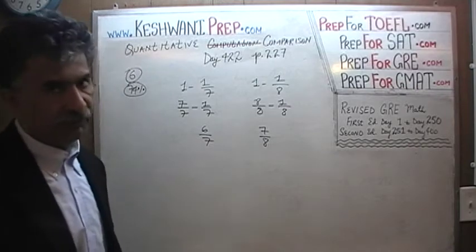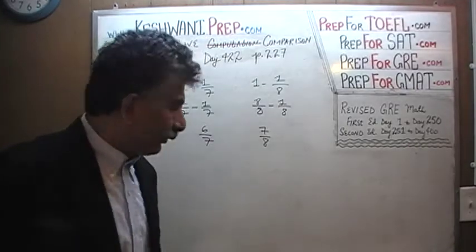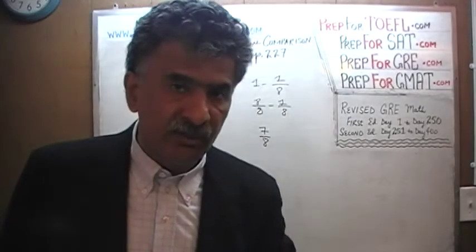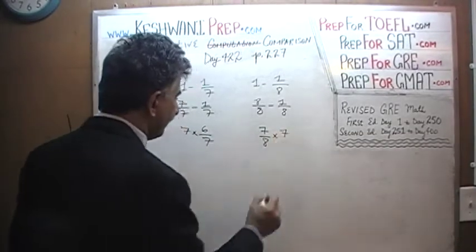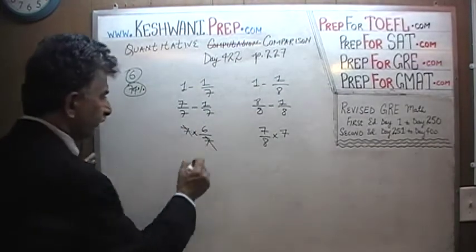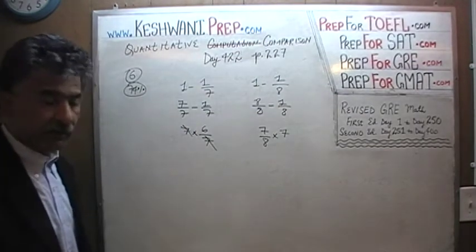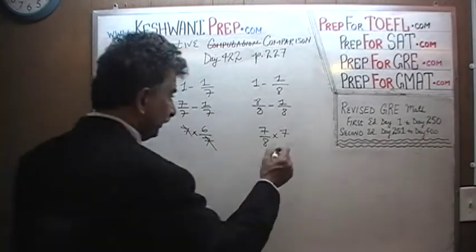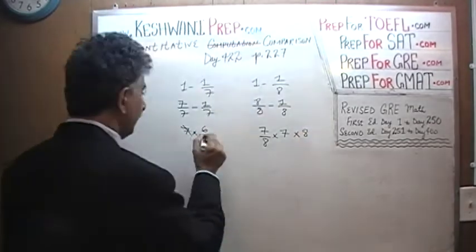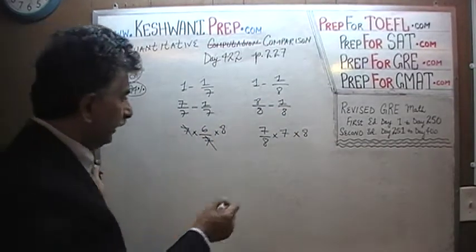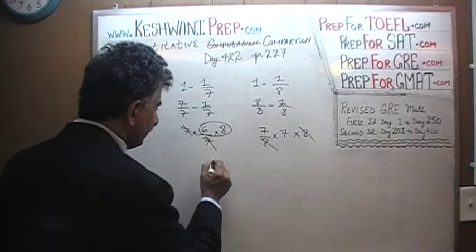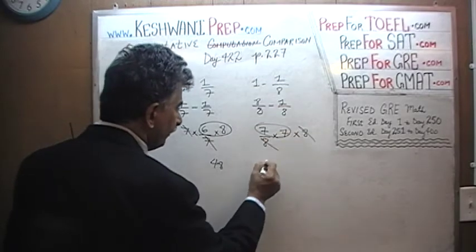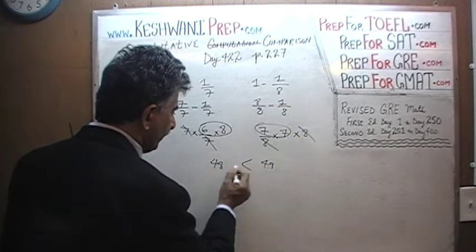Now, how do you compare fractions? Your job is to get rid of the denominators as quickly and efficiently as possible. Multiply both columns by 7 so the 7 disappears. Then multiply both columns by 8 so the 8 disappears. We are left with 6 times 8 which is 48, versus 7 times 7 which is 49. Since 49 is bigger than 48, the answer is B.